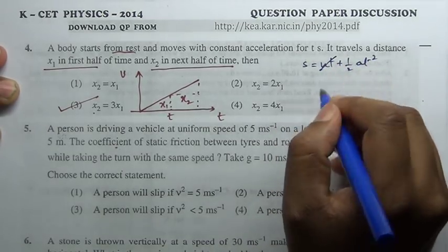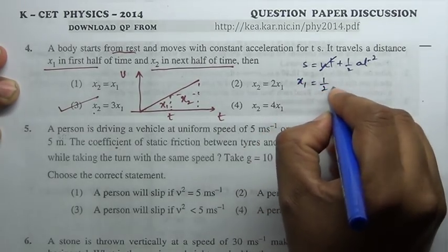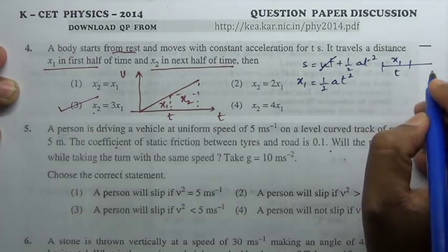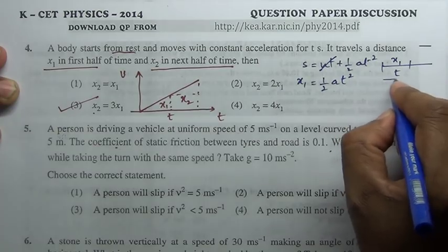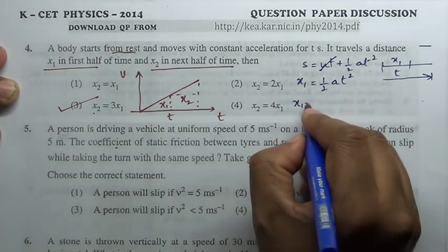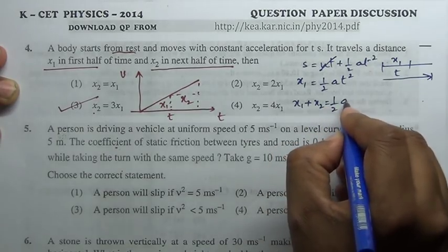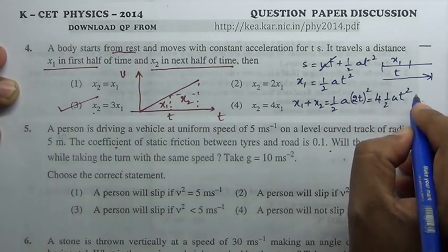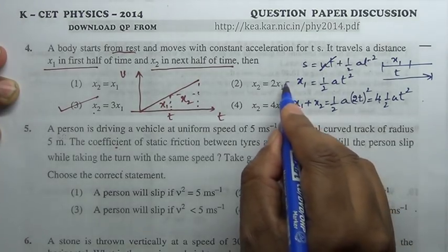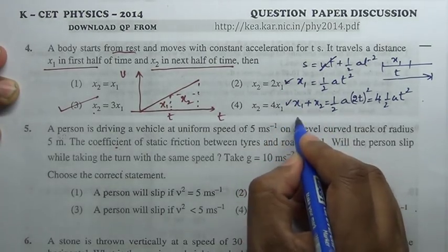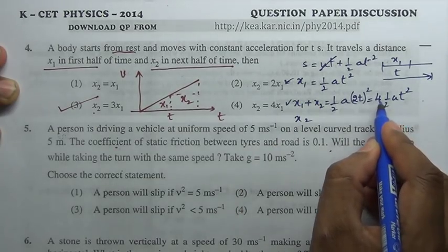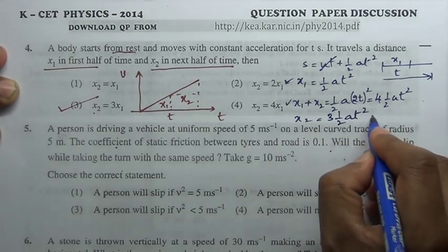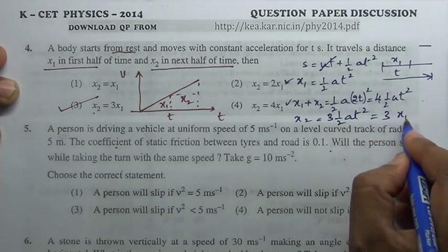Or else using formula: displacement equal to ut plus half a t square. Initial velocity is zero, therefore x1 is half a t square, the distance traveled in first t seconds. For the entire interval, x1 plus x2 equal to half a times 2t square, so it is 4 times half a t square. By taking the difference of these two equations, we get x2 equal to 3 times half a t square, which is 3 times x1.